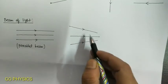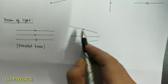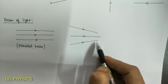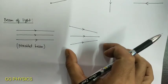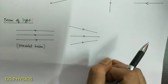In the second diagram, the rays are converging towards a point. So this kind of beam is called a converging beam.